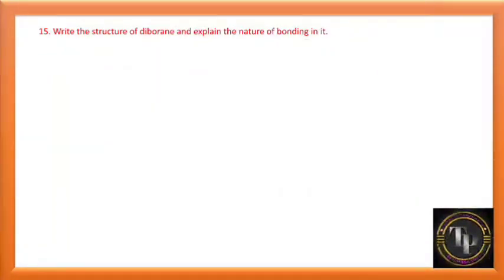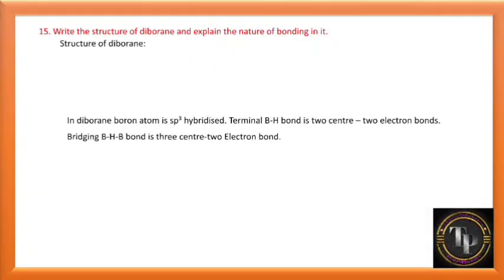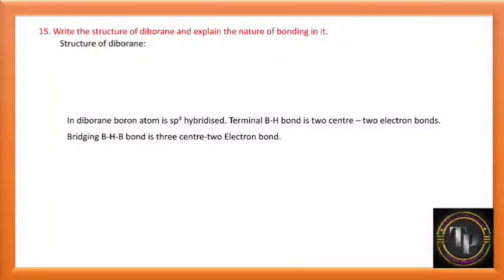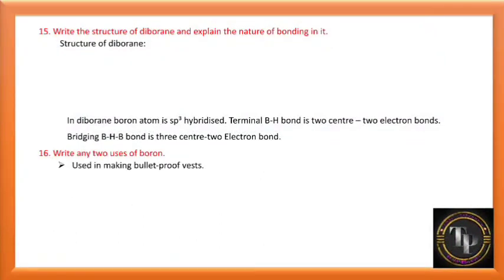Write the structure of diborane and explain the nature of bonding. In diborane, the boron atom is sp3 hybridized. The terminal B–H bond is a two-centre two-electron bond, and the bridging B–H–B bond is a three-centre two-electron bond, also called a banana bond. Draw the structure from the NCERT textbook.